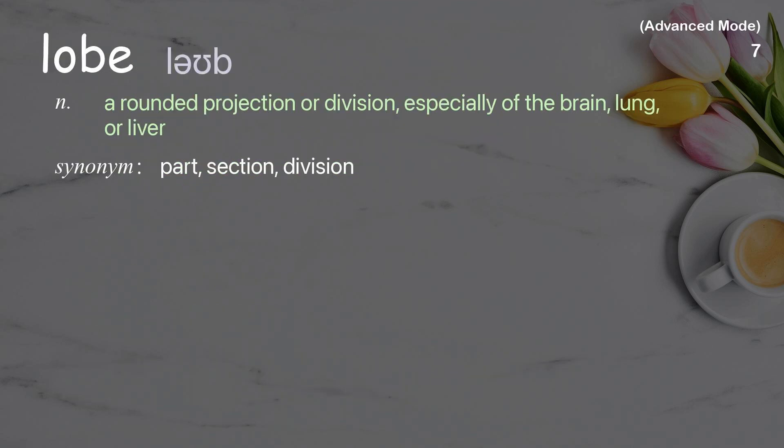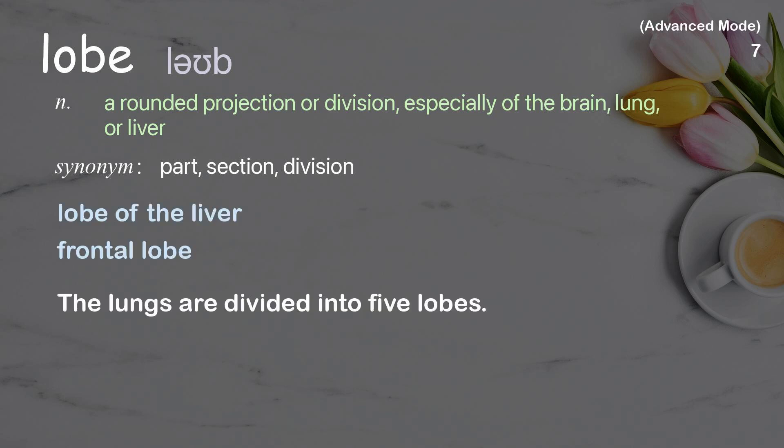Lobe: a rounded projection or division, especially of the brain, lung, or liver. Examples: lobe of the liver, frontal lobe. The lungs are divided into five lobes.